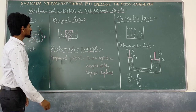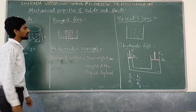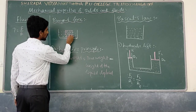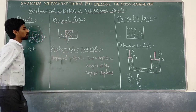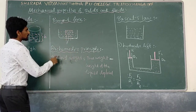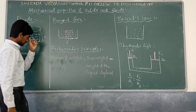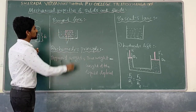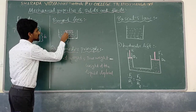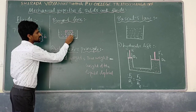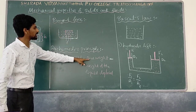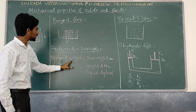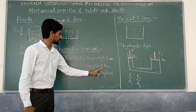The buoyant force: when an object is immersed in a liquid, there is an apparent upward force applied by the fluid on the object — that is called the buoyant force. Archimedes' principle states that the loss in weight of the object equals the weight of the fluid displaced. So, apparent weight equals true weight minus the weight of the liquid displaced.